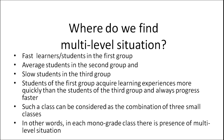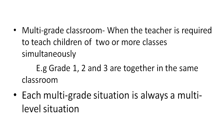Students of the first group acquire learning competencies more quickly than students of the third group and always progress faster. Such a class can be considered a combination of three different smaller classrooms. In a multi-grade classroom, when the teacher is required to teach children of two or more classes simultaneously — for example, teaching grades 1, 2, and 3 together — the teacher still has to deal with the multi-level situation.